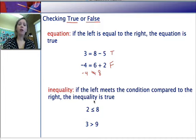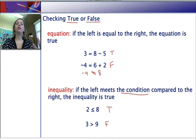We can do the same kind of thing with an inequality. If the left meets the condition that's compared to the right, in other words, if you meet the condition of the inequality symbol there, then the inequality is true. So, for example, in the first one, 2 is less than or equal to 8. That's true because 2 is smaller than 8. If you look at the second example, 3 is greater than 9. That's false because 3 is smaller than 9. So that's just a check to make sure our equations and our inequalities are either true or false.